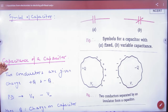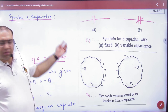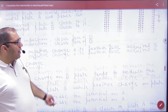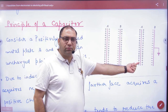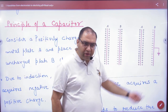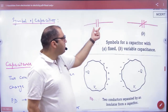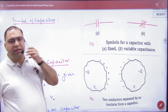Symbol of capacitor: we have done the principle of capacitor and represented the parallel plate capacitor. We will not draw a complex diagram every time; instead, we will draw a symbol of the capacitor. This symbol represents the parallel plate capacitor.